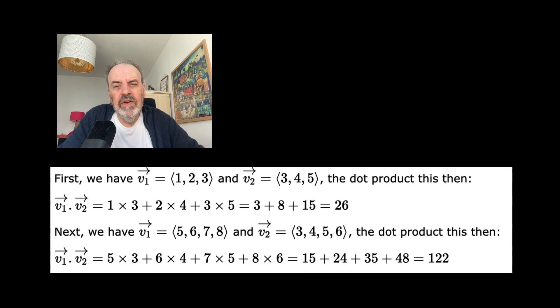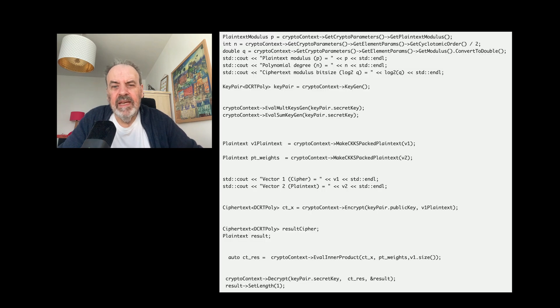In homomorphic encryption with machine learning, we can take these operations and make one of the vectors, such as the activation vector, encrypted, while the weighting vector can stay as a plain text vector.